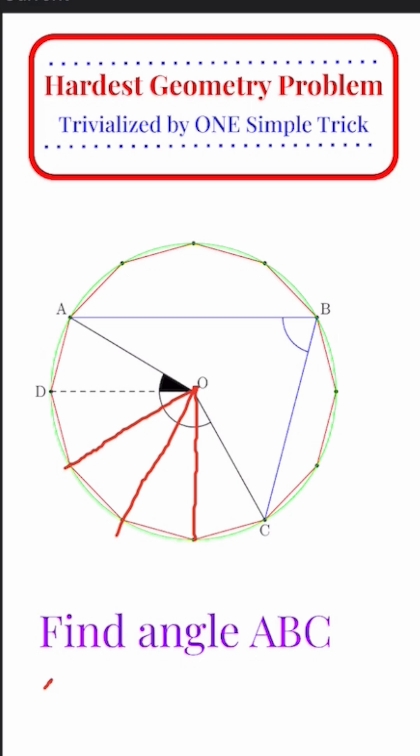So the measure of angle AOC is equal to 5/12 times 360, which is 150. And ABC, by the Inscribed Angle Theorem, is half of that, or 75 degrees. And that's our final answer.